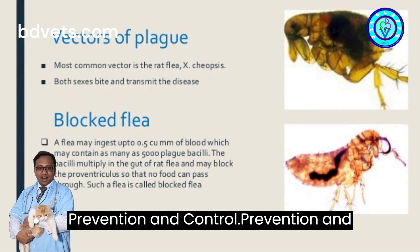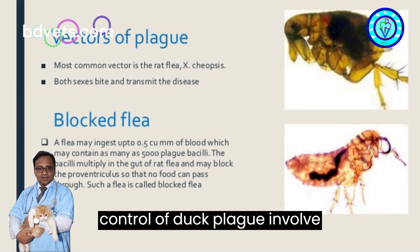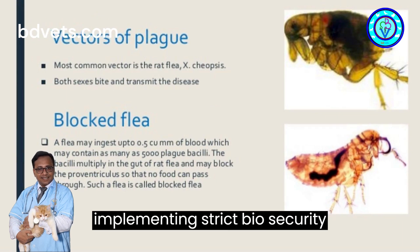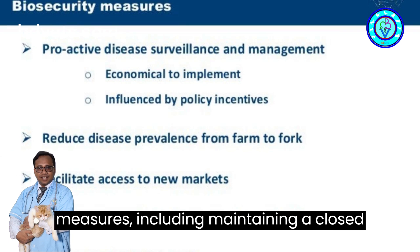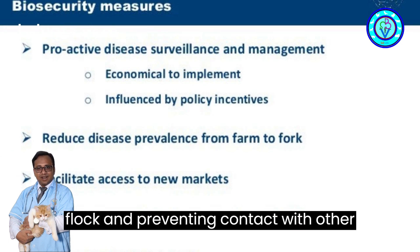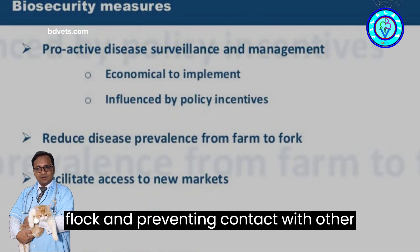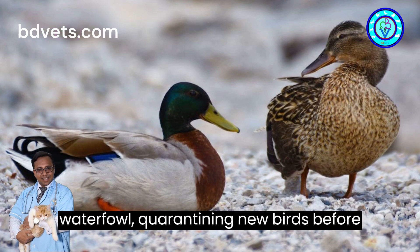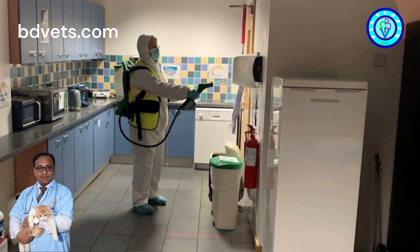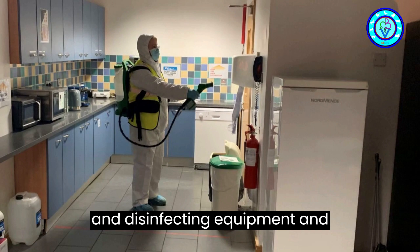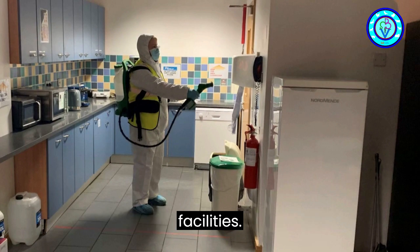Prevention and Control: Prevention and control of duck plague involve implementing strict biosecurity measures, including maintaining a closed flock and preventing contact with other waterfowl, quarantining new birds before introducing them to the flock, and cleaning and disinfecting equipment and facilities.